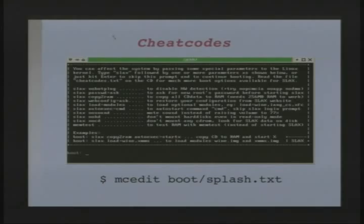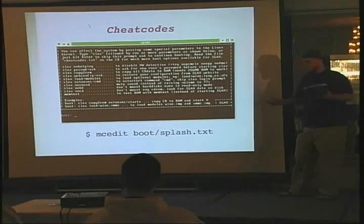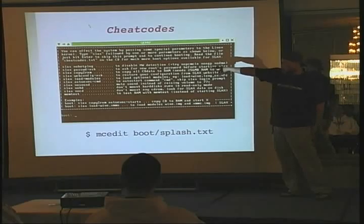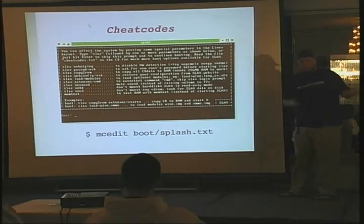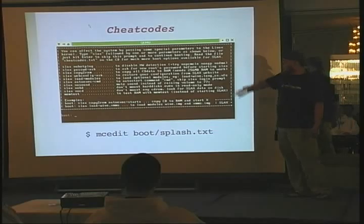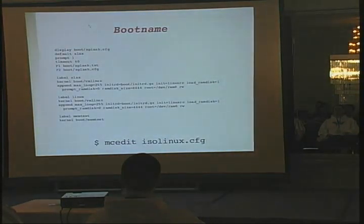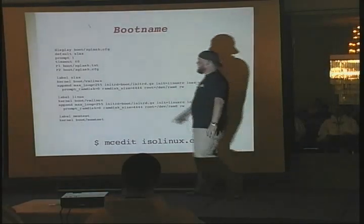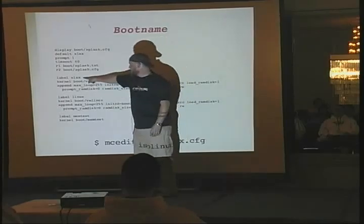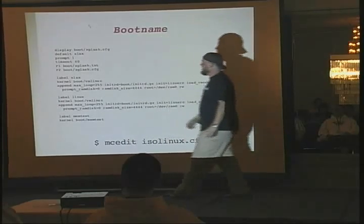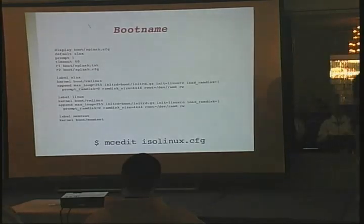There are some cheat codes in Slax you can tell it to do different things. If you want to call your distro Ponyboy Linux, you obviously don't want to type 'slax' to boot Ponyboy Linux. You can edit the isolinux.config file and change the default to whatever you want to call it. So if I was doing this for Slasterisk, I'd name it Slasterisk and change the default to Slasterisk. And that works on all Linux.